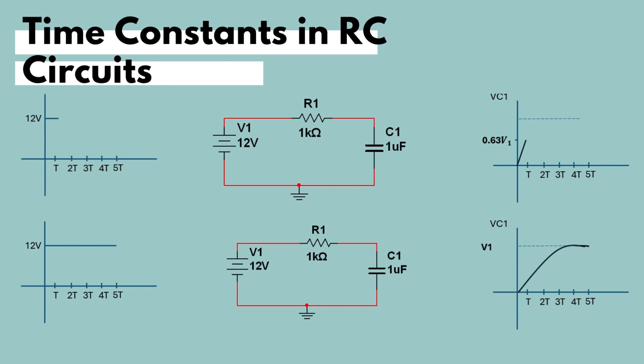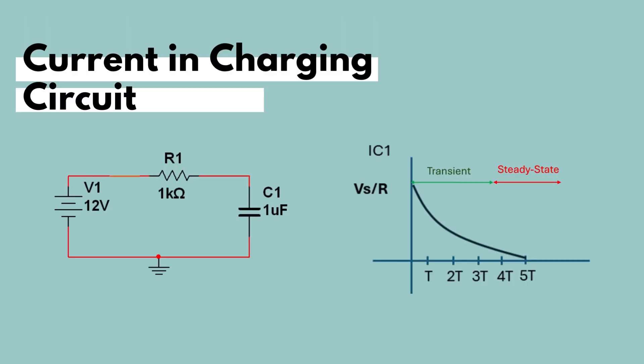After five time constants, at six or eight five constants, the capacitor will act as an open circuit, and we can see that the current diminishes to zero. And therefore, the voltage across the capacitor is equal to the voltage across the power supply.